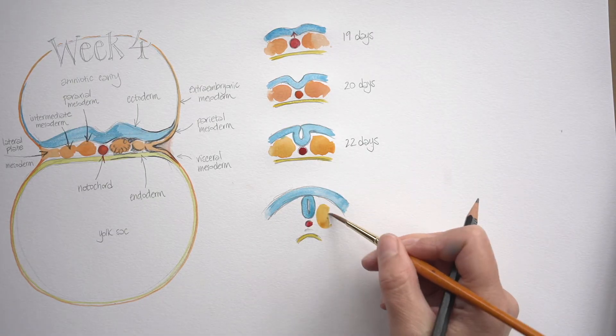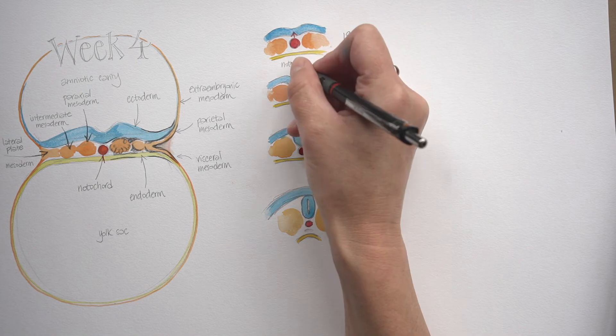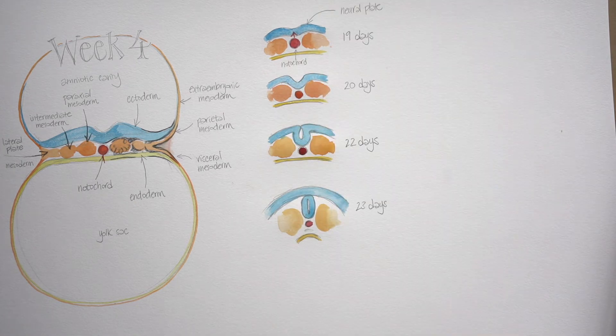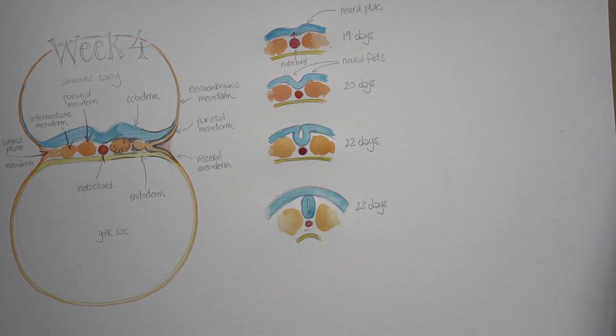By 23 days we can see that tube of ectoderm has now completely detached itself from the overlying ectoderm. That tube is now something different - we call it the neural tube. So the neural tube is forming out of ectoderm under the influence of chemical messages coming from the notochord and tissues around the notochord.